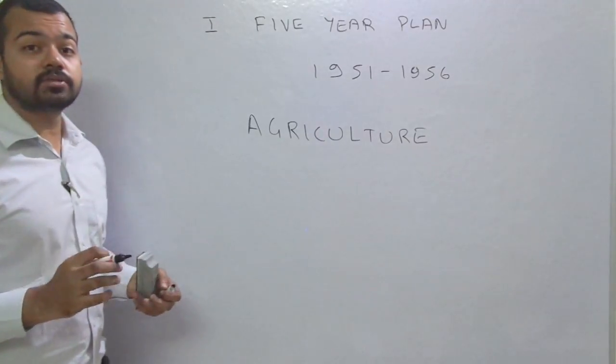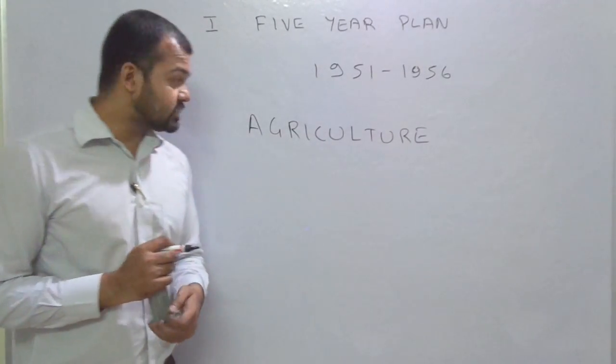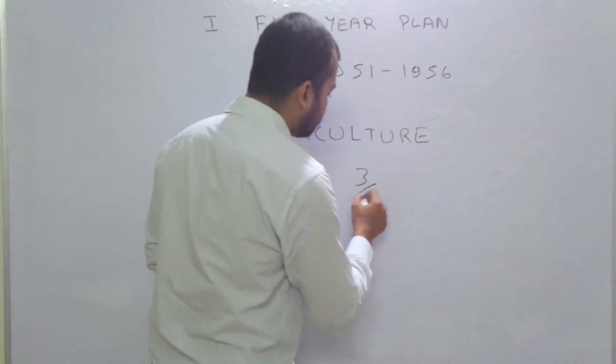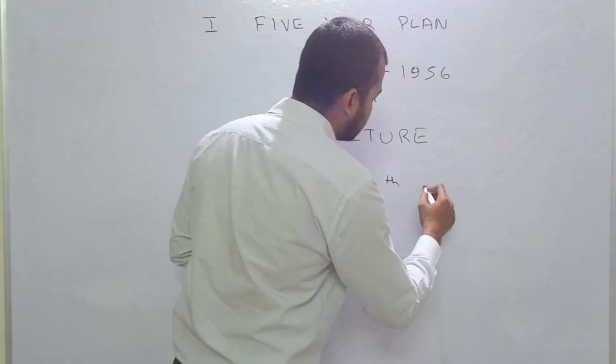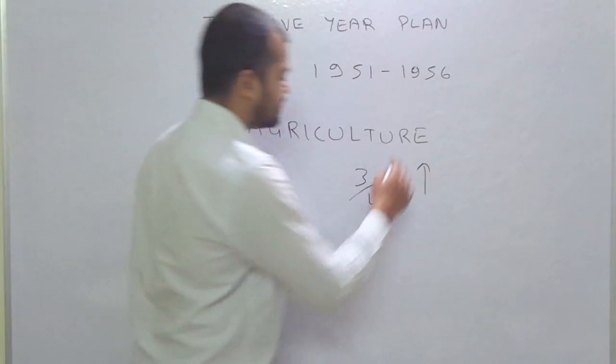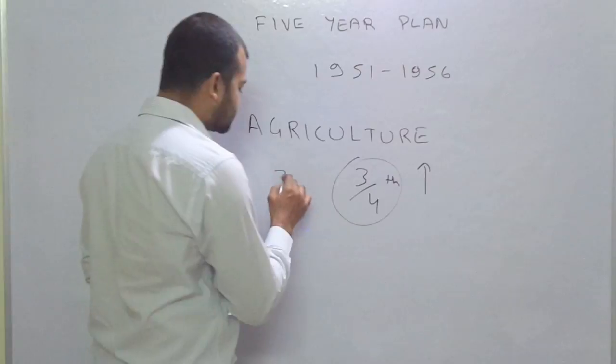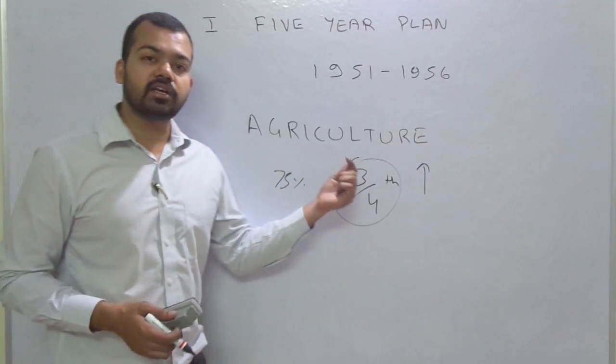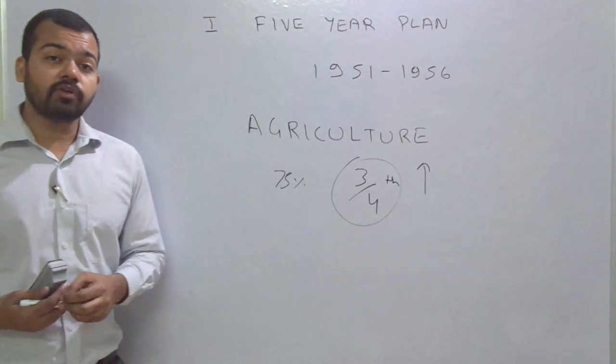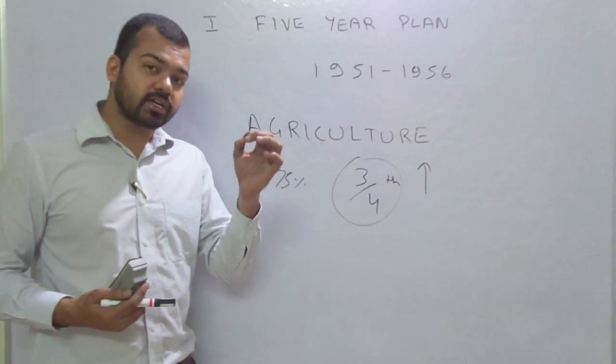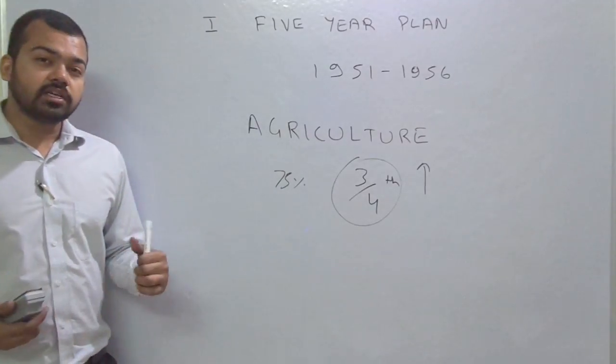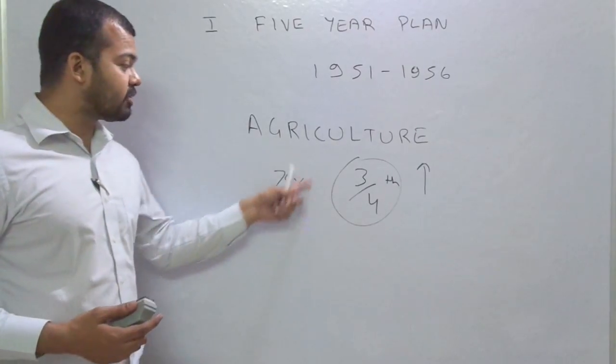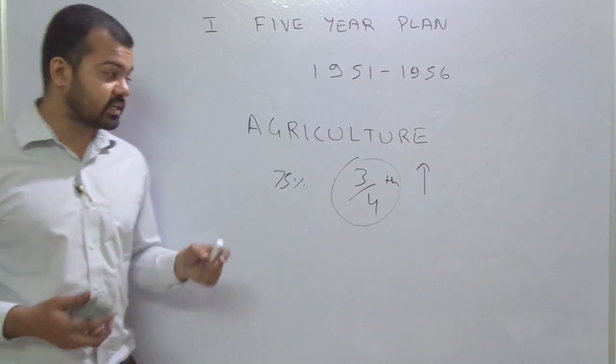Agriculture was given the foremost priority. This is very important because at the time of the first 5-year plan, our three-fourths population, 75% of the population, was engaged in agriculture sector. So it was obvious that we should focus on agriculture sector in order to move out from poverty.